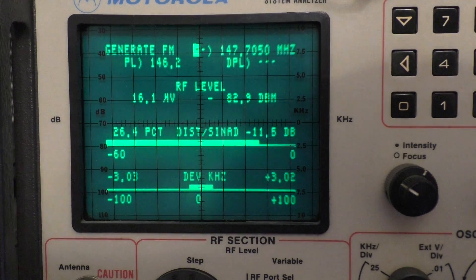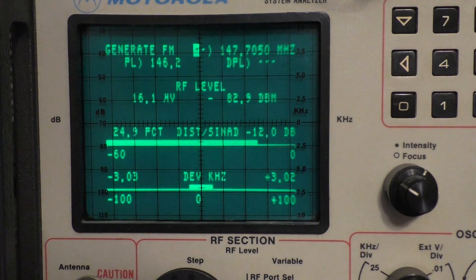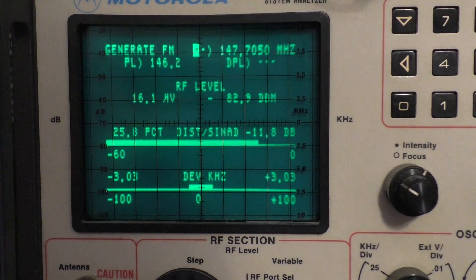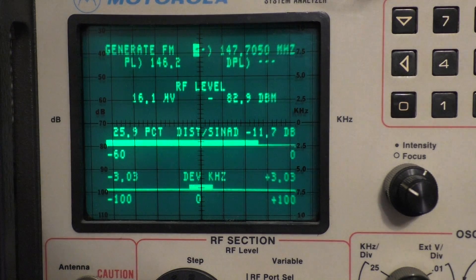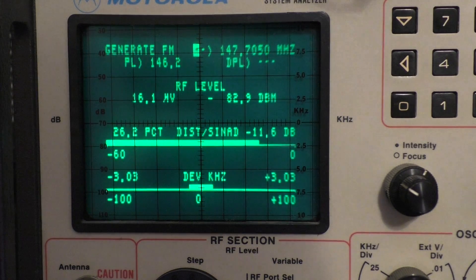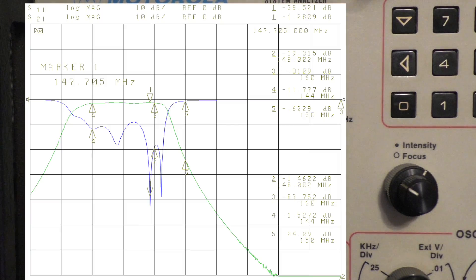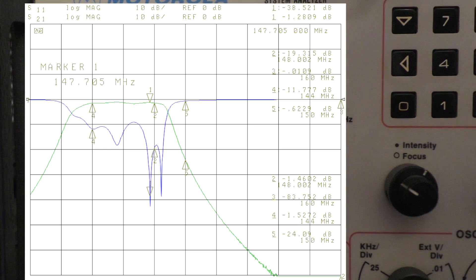We could actually probably run a preamp with this as well if we had a true preselector cavity on here rather than just a pass filter. Because this does have a built-in preselector. But we shifted the preselector to be centered over the amateur band. So being we're a 147.705 receive, 147.105 transmit, it's probably not the best thing. At least for that.